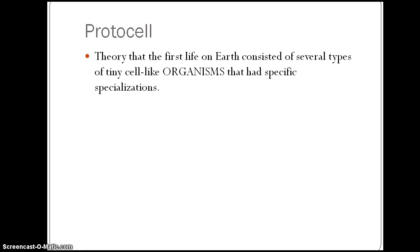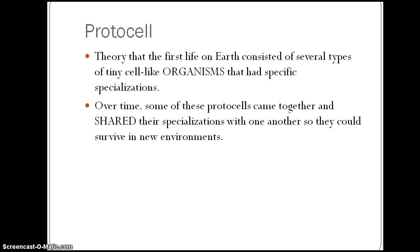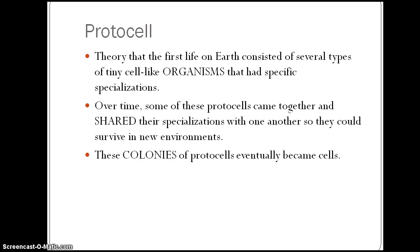The next theory was the protocell theory, which said that life began on Earth composed of tiny cell-like organisms that had very specific specializations and could only survive in very specific locations. Eventually these protocells came together and shared those specializations with one another so they could survive in new environments, and eventually those colonies of protocells became what we know today as cells.